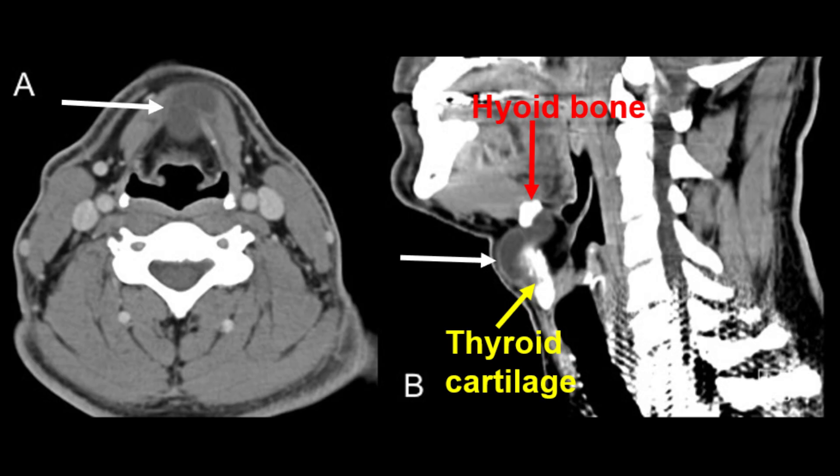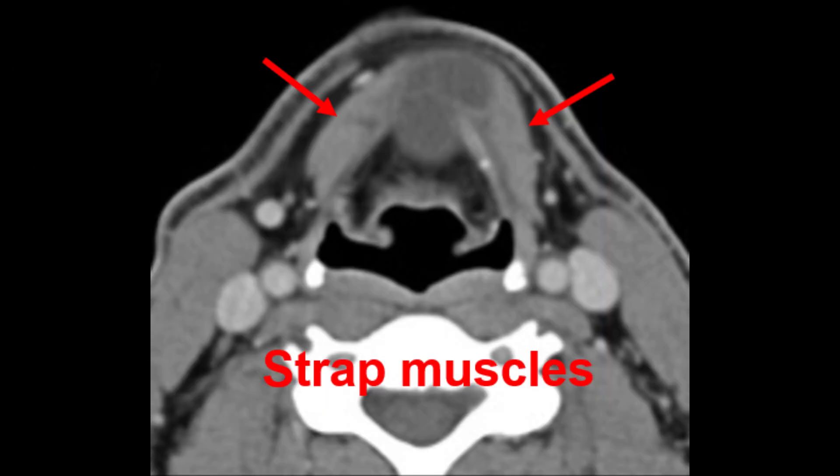To be more specific, it lies between the hyoid and the thyroid cartilage. Returning to the axial images, the lesion is in the midline embedded within the anterior soft tissues of the neck. It also appears to be nestled between the infrahyoid muscles, also known as the strap muscles. This detail is important for identifying its anatomical track.